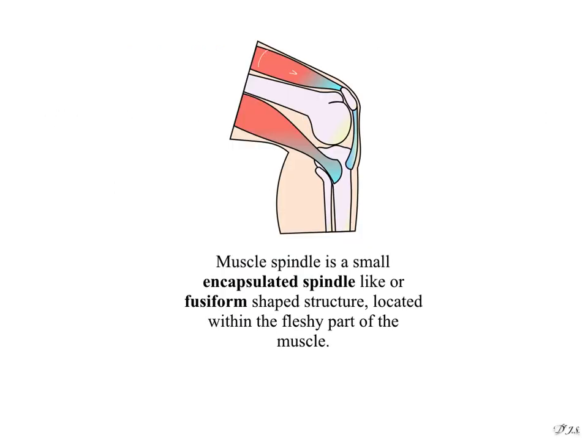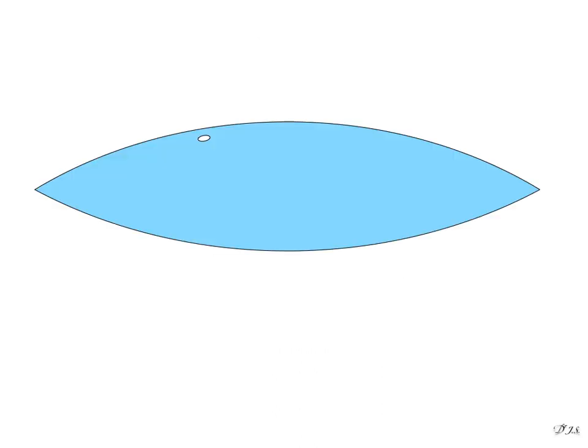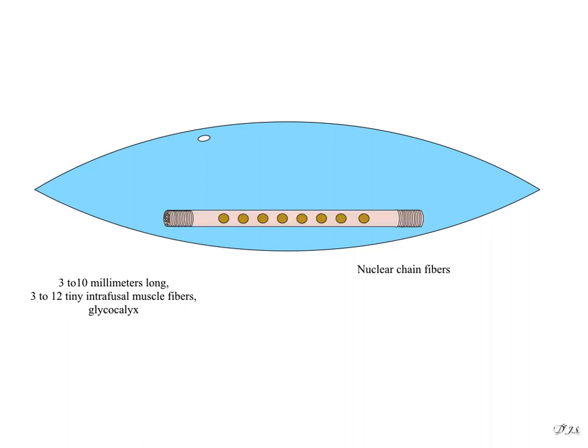Muscle spindle is a small encapsulated spindle-like or fusiform-shaped structure located within the fleshy part of the muscle. In an enlarged view we will see the structures in this capsule. Muscle spindle has 3 to 12 tiny intrafusal muscle fibers in this capsule. This capsule is attached to the ends of muscle tendons, and the intrafusal fibers are attached to the extrafusal fibers.